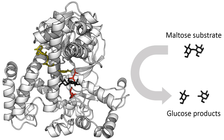The discovery that enzymes could be crystallized eventually allowed their structures to be solved by X-ray crystallography. This was first done for lysozyme, an enzyme found in tears, saliva, and egg whites that digests the coating of some bacteria. The structure was solved by a group led by David Chilton Phillips and published in 1965. This high-resolution structure of lysozyme marked the beginning of the field of structural biology and the effort to understand how enzymes work at an atomic level of detail.